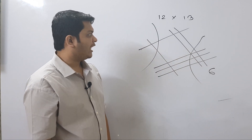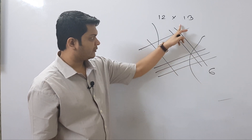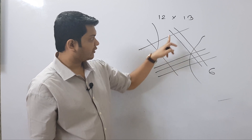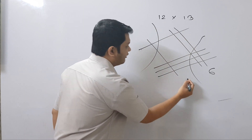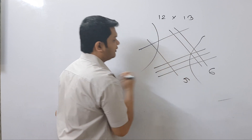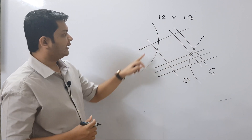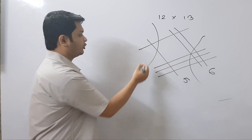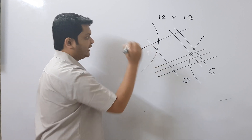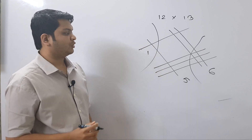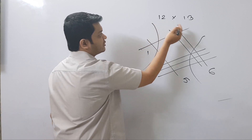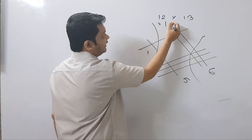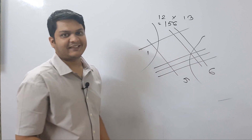And how many intersecting points do we have in the middle group? 1, 2, 3, 4, 5. So we have a 5 here. And in the leftmost group there is only one intersecting point, so we will write 1 here. So 12 times 13 is equal to 156.